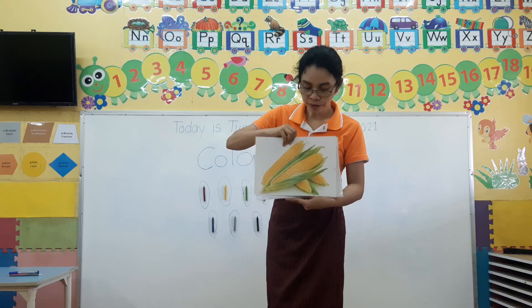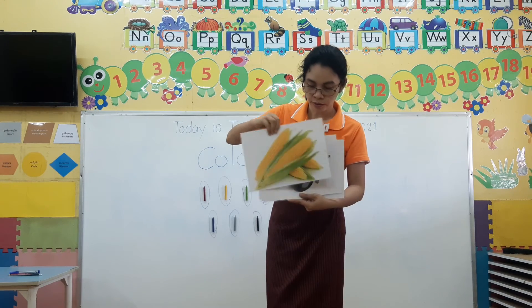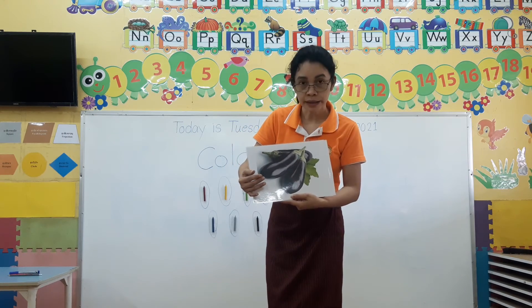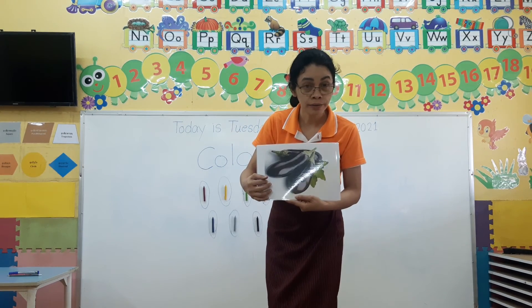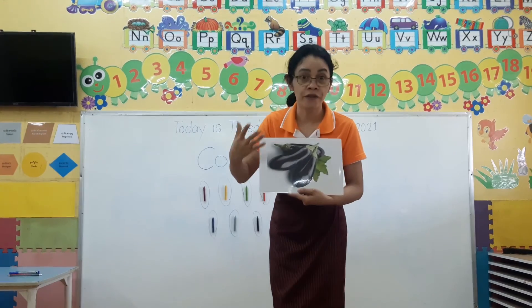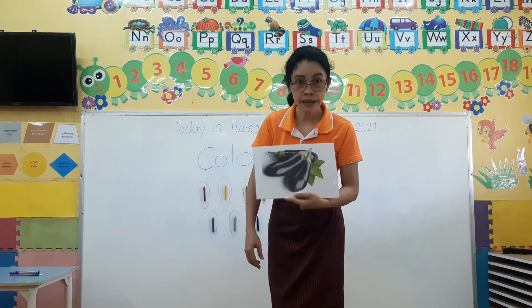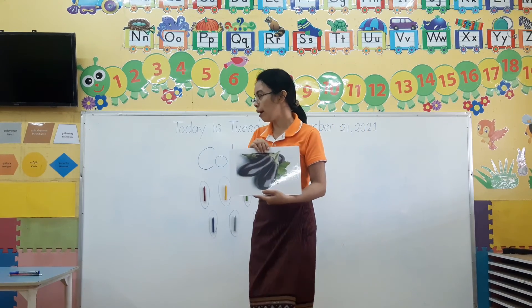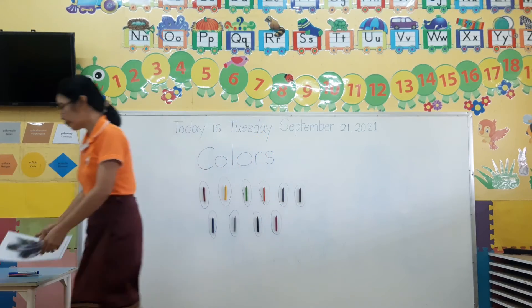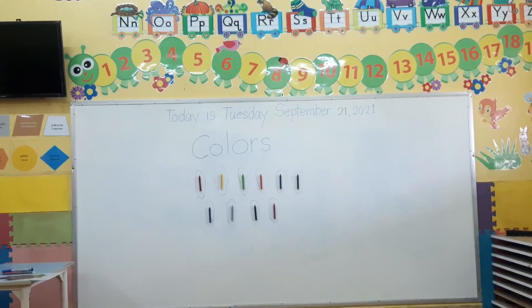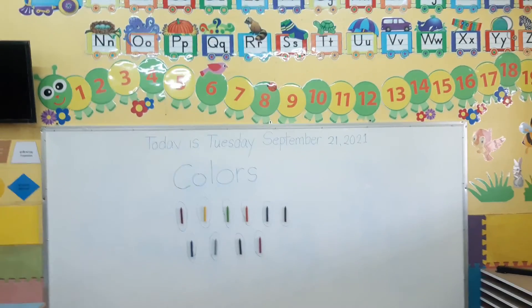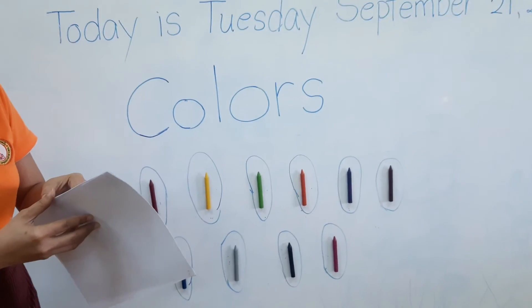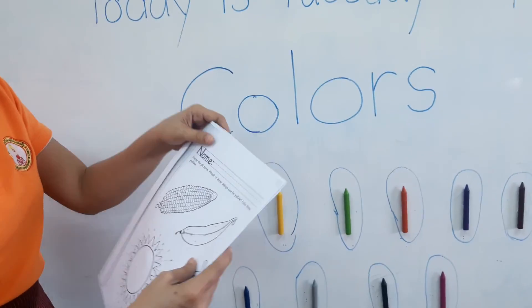Okay. What about this one, children? This is an eggplant. This can be a color yellow? No. The color of this is violet. Yes? Or purple. Yes? Okay. We have an activity here and we have an eggplant. Children, I want you to color this picture.